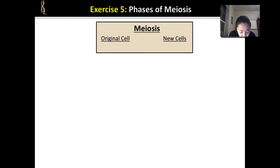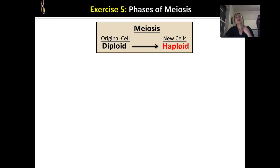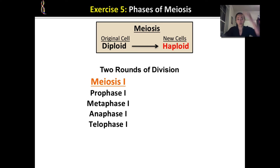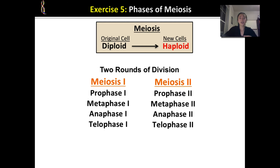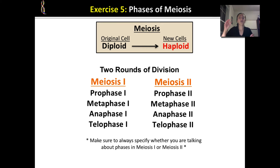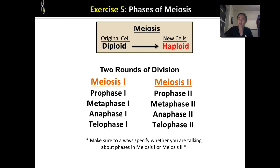Now let's describe the characteristic events of each phase of meiosis. The goal of meiosis is to create haploid cells, always going from diploid to haploid. This requires two rounds of division: meiosis 1 (prophase, metaphase, anaphase, telophase 1) and meiosis 2. An important exam tip: when identifying phases of meiosis, you must indicate whether you're talking about meiosis 1 or meiosis 2, because different things happen in each stage.